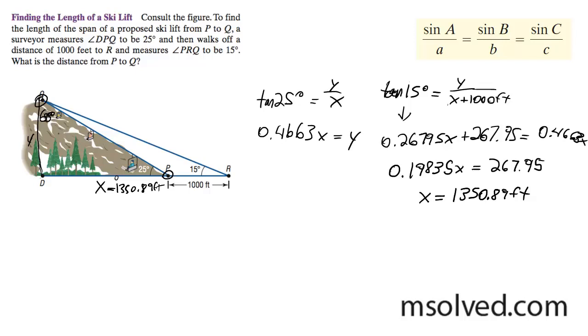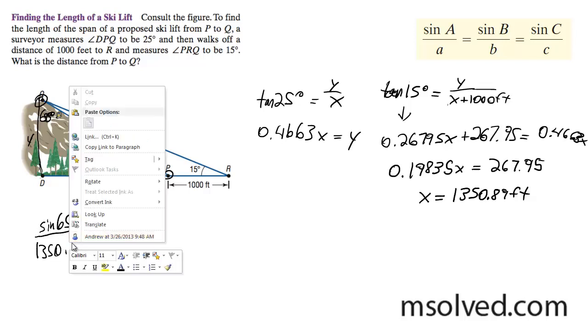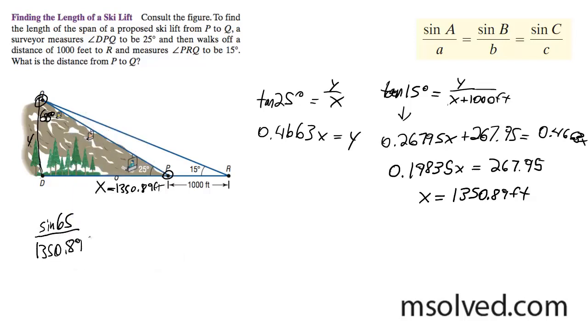There's a few things I could do. All right, so I'm going to take sine of 65 over 1,350.89 feet is equal to sine of 90. This should be easy because it's just 1.